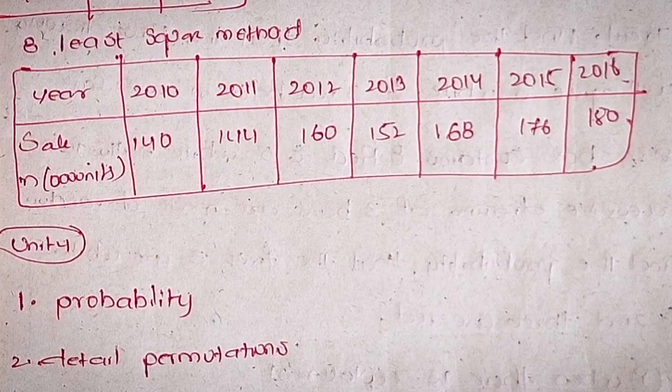Eighthly, least square method. Year: 2010, 2011, 2012, 2013, 2014, 2015, 2016. Sales: 140, 144, 160, 152, 168, 176, 180.